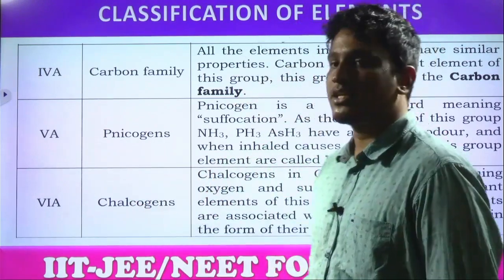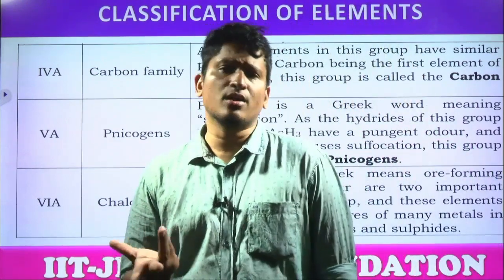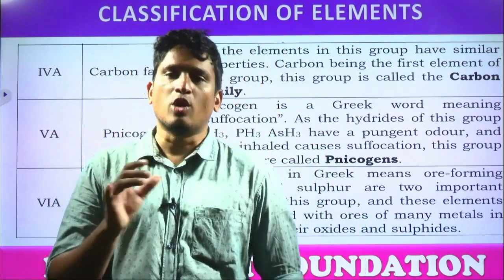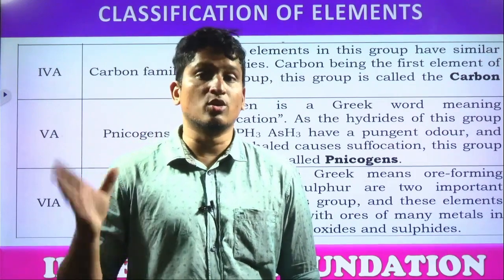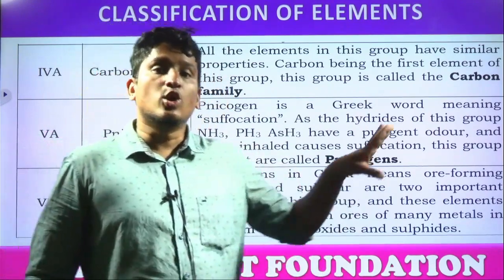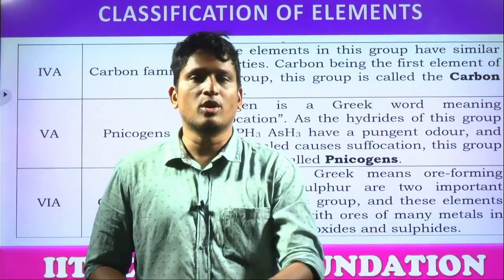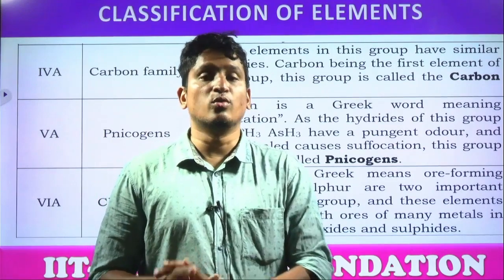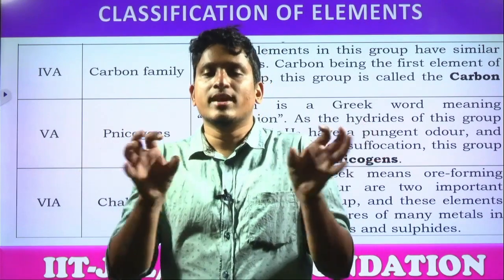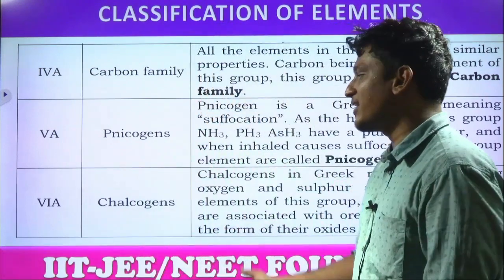Group 16 elements are called chalcogens. Chalco means copper, and gen means generate. These group elements are associated with generating copper — not by nuclear reactions, but because copper is available in nature in combination with 16th group elements only: copper oxide, copper sulfide, copper selenide, copper telluride. While extracting and refining copper, we separate it from 16th group elements. That is why these group elements are named chalcogens.